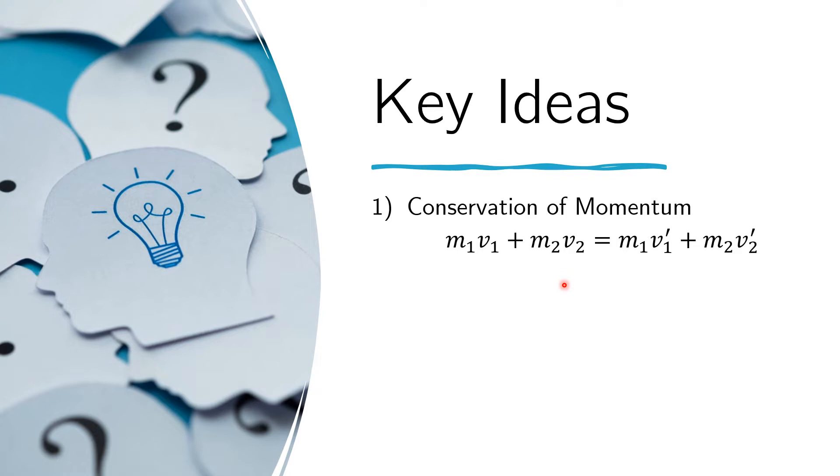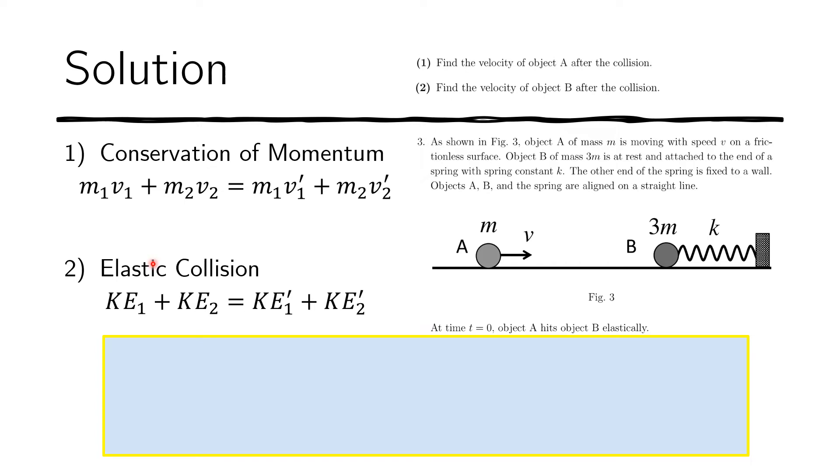The other relevant idea is the idea of an elastic collision. An elastic collision is one such that the kinetic energy is conserved. So the sum of the kinetic energies of object A and that of object B before the collision must be equal to the sum of the kinetic energies after the collision: KE₁ + KE₂ = KE₁' + KE₂'. We need these two equations because we are looking for two unknowns, the speeds after the collision, v₁' and v₂'.